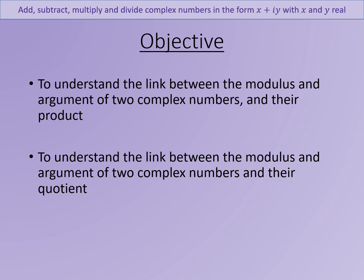So far we've looked at finding the modulus and the argument of complex numbers. We're now going to look at what happens if you take two complex numbers and multiply them together — find their product and see whether there is a link between the modulus and the argument of the answer with the modulus and the argument of the original two numbers.